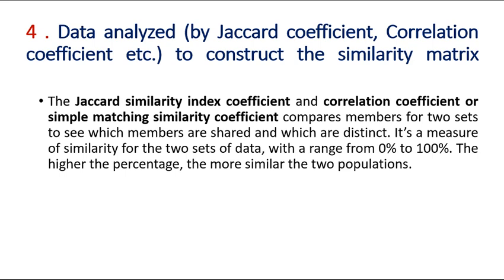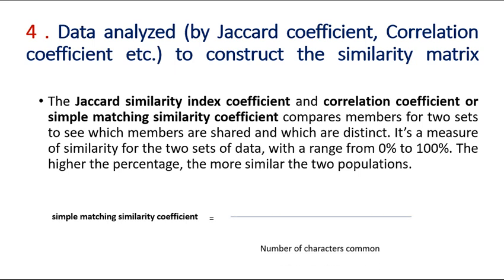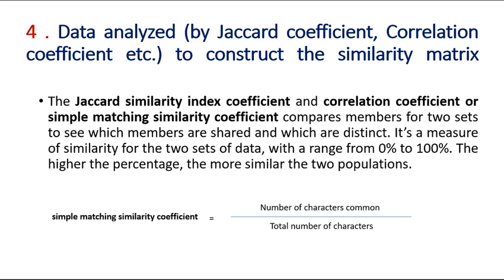When we have two OTUs or sets of data, we compare their similarity — either totally absent giving 0%, or 100% similarity meaning they are almost the same. A higher percentage means the two populations are more closely related. The simple matching similarity coefficient formula is: number of characters in common divided by total number of characters.